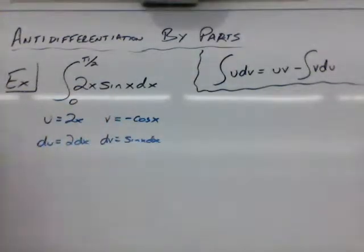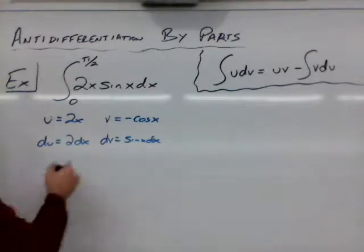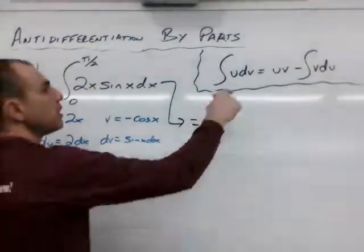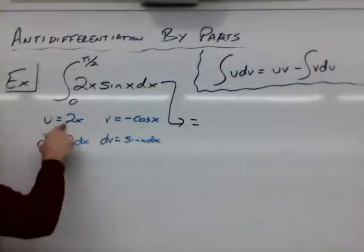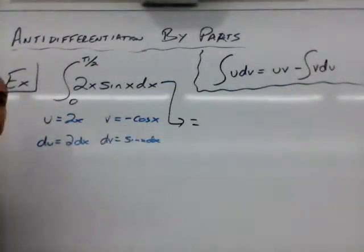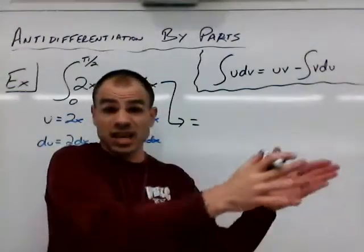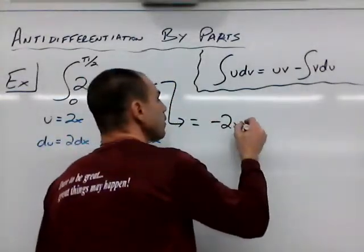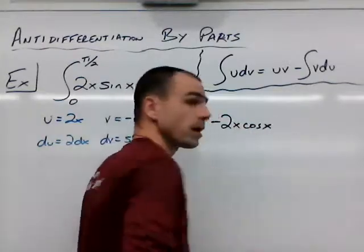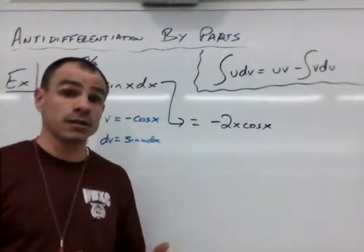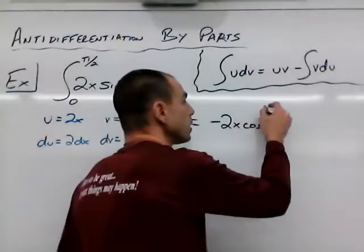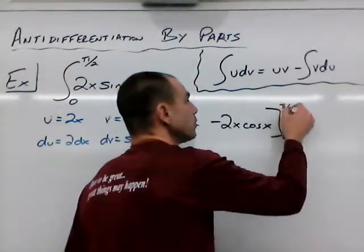So now we can do our integration by parts. So we head down here, and this is equal to u times v. So u is 2x, and v is the opposite of the cosine of x. So we have negative 2x cosine x. Now we took an anti-derivative, and we still have our bounds. So this is being evaluated from 0 to pi over 2.